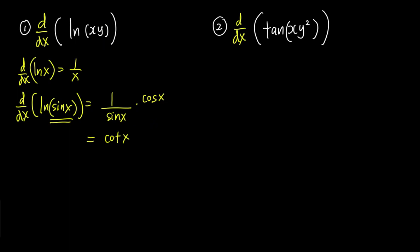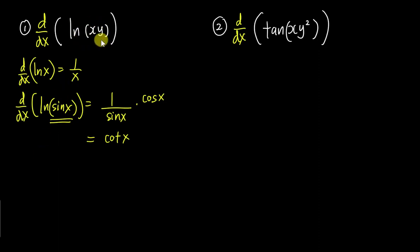Let's have a look at these questions. For Question 1, if I differentiate ln(xy), whenever we differentiate ln of something, we just take 1 over it. So we get 1 over xy.